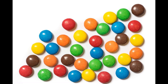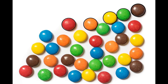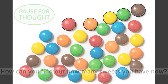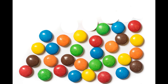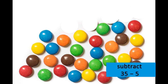At first, you had 35 sweets. Then you gave your friend 5 sweets. How can you find out how many sweets you have now? To calculate how many are left, we subtract. So to find out the number of sweets you have now, you need to subtract.